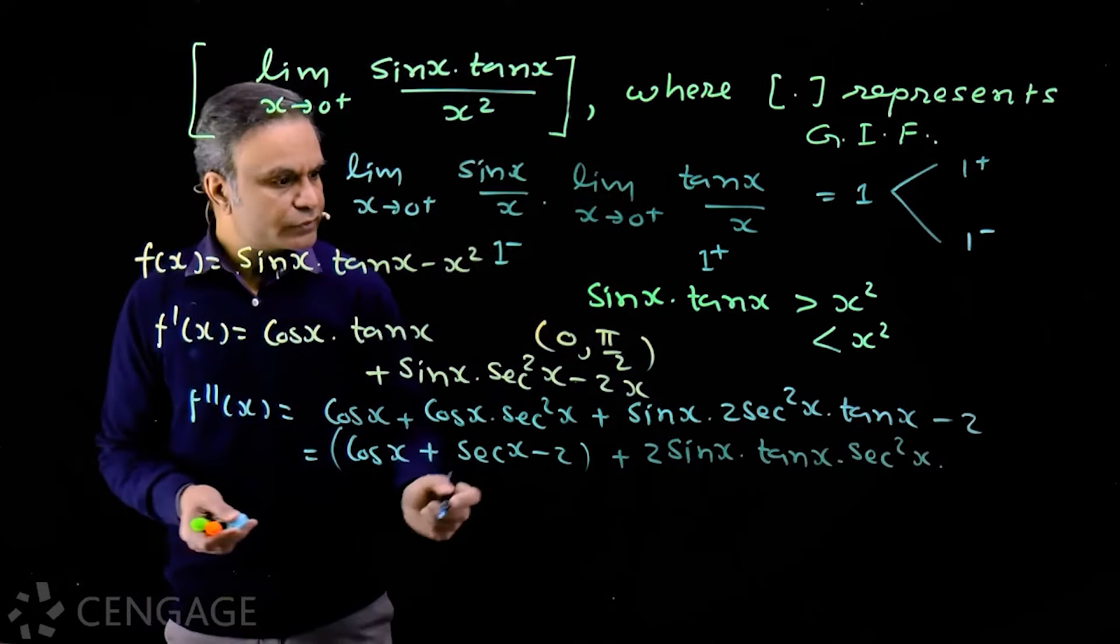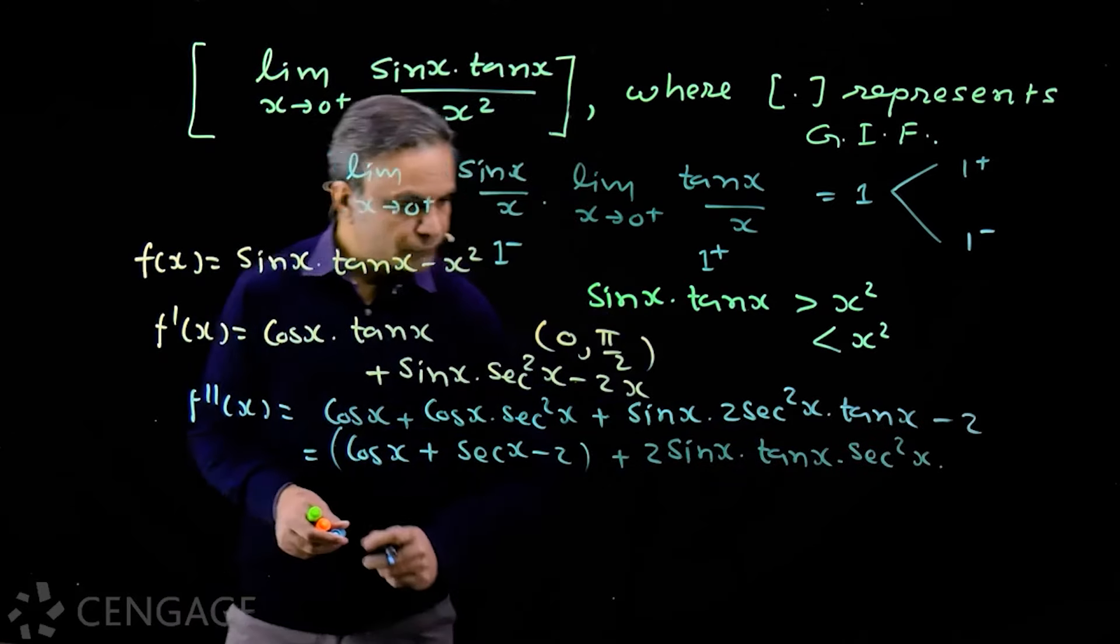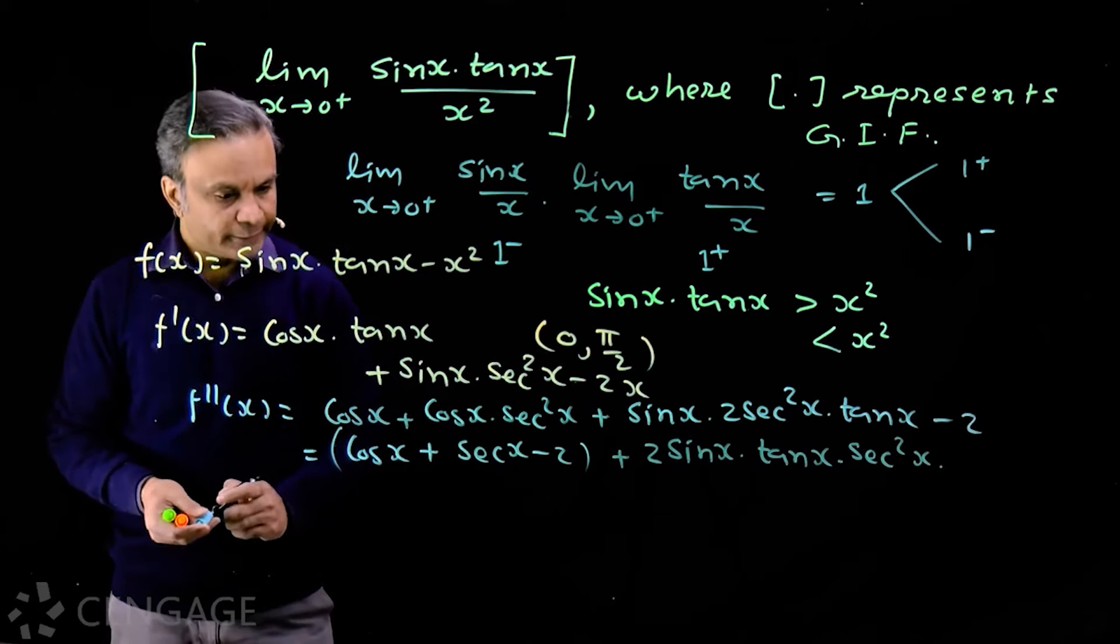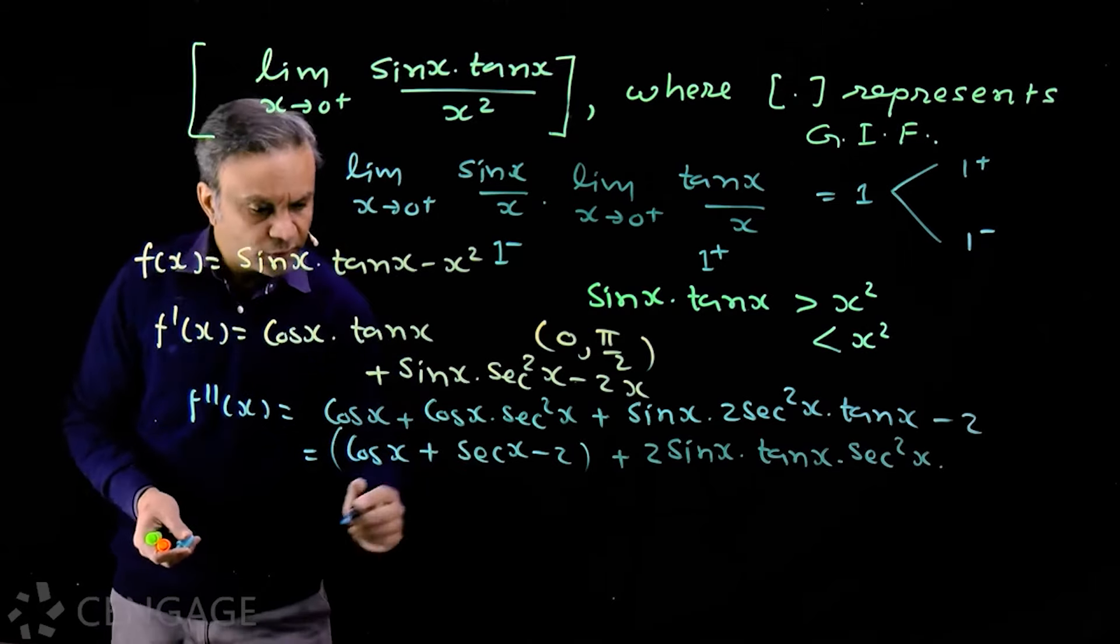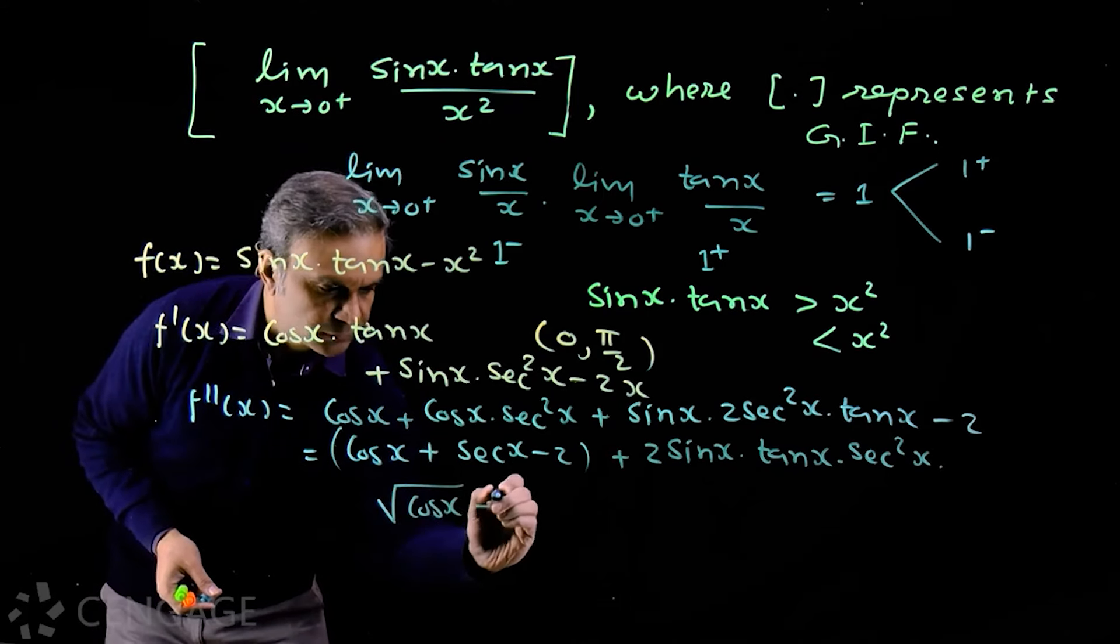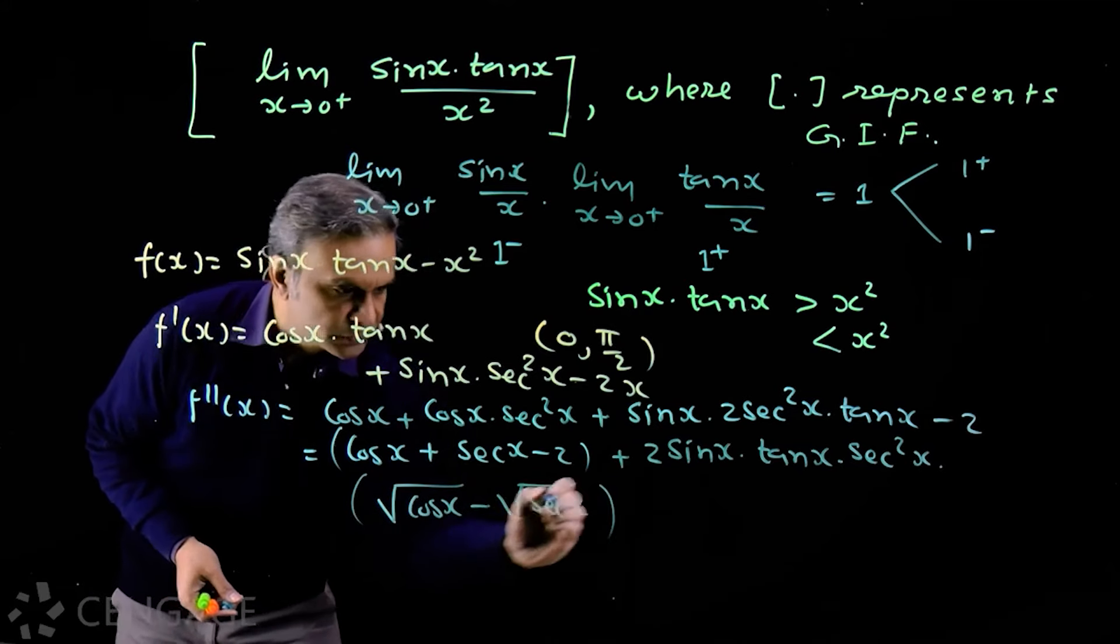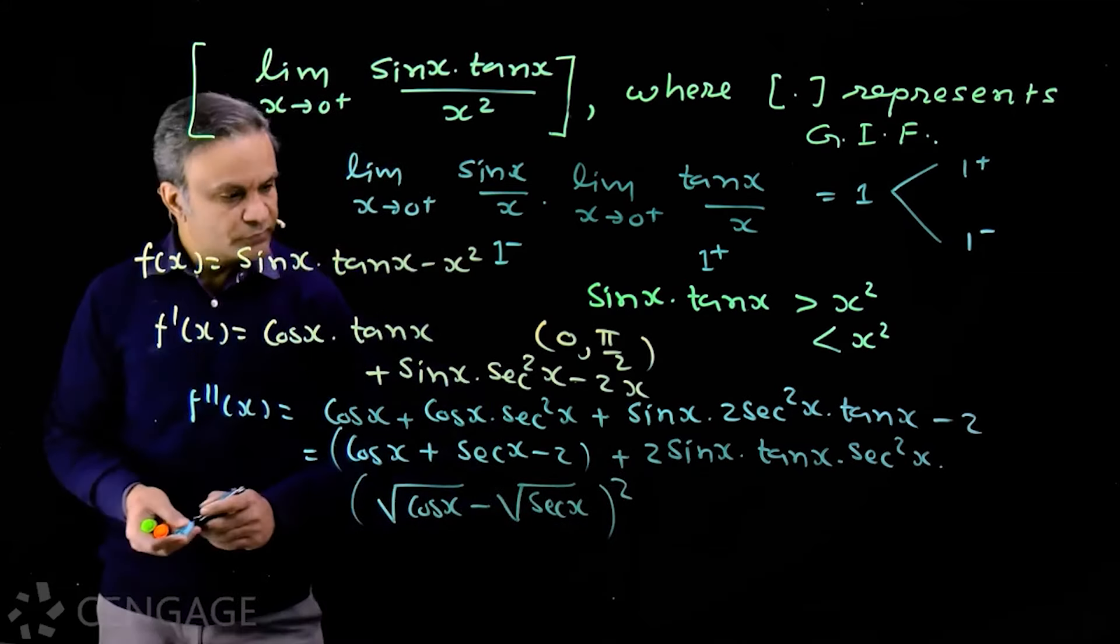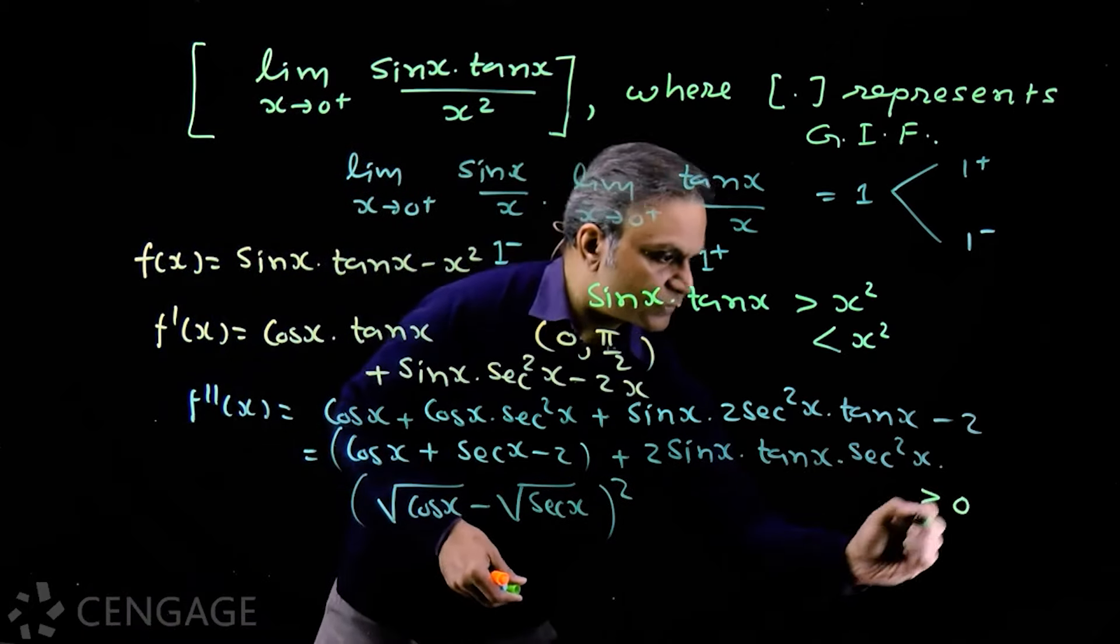Now for x belongs to 0 to pi by 2, this is positive. All sin x, tan x, and sec squared x are positive, and this value is always positive because this is root cos x minus root sec x whole square. I'm using completing the square method concept.